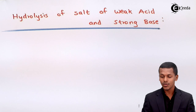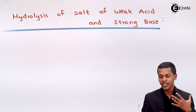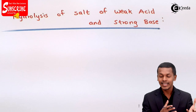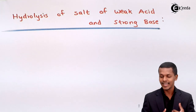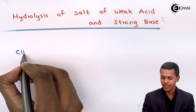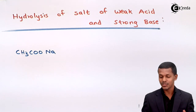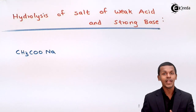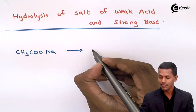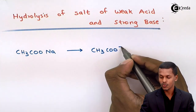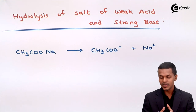We are going to talk about the hydrolysis of the salt of weak acid and strong base. From the previous lecture on salts and types of salt, we know that sodium acetate is a salt derived from a weak acid and strong base. So I am going to explain about CH3COONa. This salt, being a strong electrolyte, will undergo ionization very easily, converting into CH3COO- along with Na+.